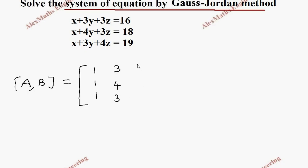And third column, the coefficient of z, which is 3, 3, 4. And the fourth column, all the constants, 16, 18, 19. So we got the augmented matrix AB.